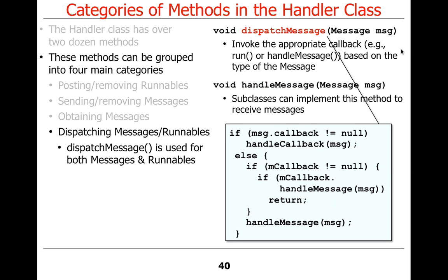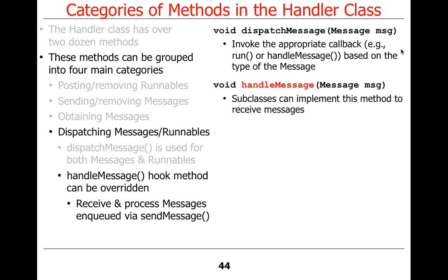The dispatch method is used for both messages and runnables. Looking at what dispatch method message looks like inside handler.java: if the message callback is not null, it calls handle callback, which ends up calling the run method on the runnable. Otherwise, if the callback is not null, that can be used — a way to avoid subclassing handler by using a callback instead. Finally, if none of those are true, it calls the handle message hook method on handler, which implies you've extended it.